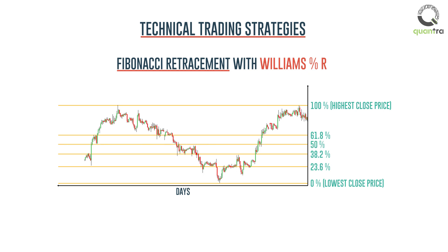Please note that we will also use the 50% level, even though it is not a Fibonacci ratio, because there is a high tendency of a security to move in a certain direction once it completes a 50% retracement. Next, we have to decide which among these lines should be the support and resistance levels.